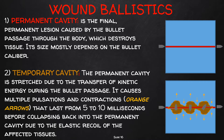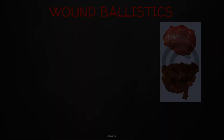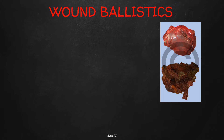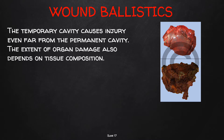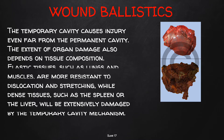Conversely, the high kinetic energy of high-velocity bullets can cause severe damage due to the sudden violent expansion of the temporary cavity within the body, leading to tissue dislocation and severe organ damage. The extent of organ damage depends on tissue composition: elastic tissues such as lungs and muscles are more resistant to dislocation, while dense tissues like the spleen or liver are extensively damaged by the temporary cavity mechanism. At the end of the process, the temporary cavity disappears, leaving only the permanent cavity — you will not find the temporary cavity itself, but will see its effects on surrounding tissues and organs.